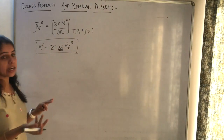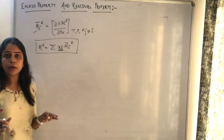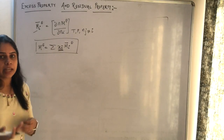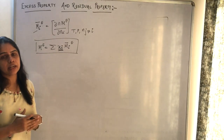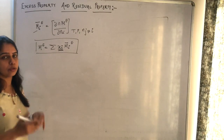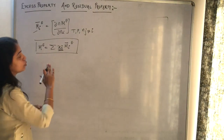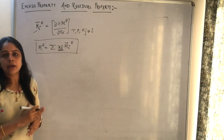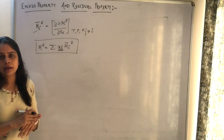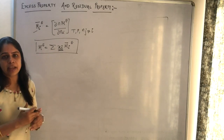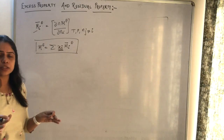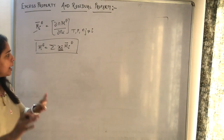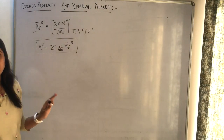The difference between excess property and residual property is that residual properties are used for gaseous mixtures, where mole fractions are denoted by yi instead of xi. All other relations remain the same — the only distinction is the notation: xi for excess properties (liquid solutions) and yi for residual properties (gaseous mixtures).